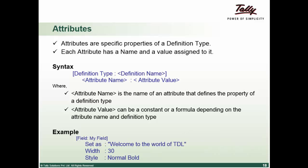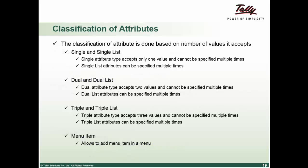Classification of attributes. The classification of an attribute is done on the basis of the number of values it accepts, and if they can be specified multiple times under a definition. Hence, there are seven types of attribute categories specified.